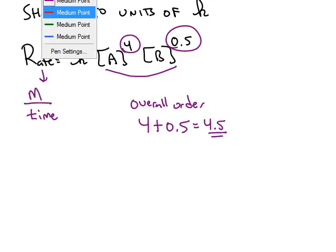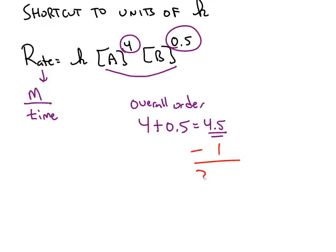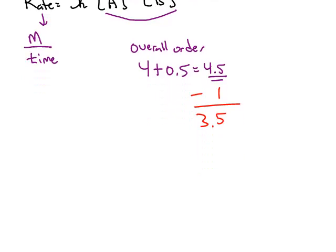Take that overall order and subtract 1. You get 3.5 in this case. If you throw a negative sign in front of that, that is the power that the molarity will be raised to in the units of k. So this will have units of k will be molarity to the negative 3.5.